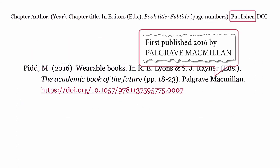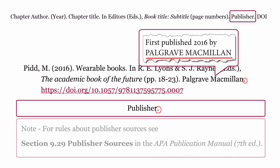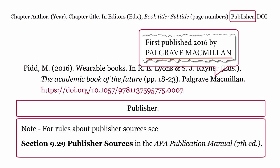Publisher. This is who published the book. The publisher is formatted using the publisher's name, followed by a full stop. For rules about publisher sources, see section 9.29 Publisher Sources in the APA Publication Manual, 7th edition.